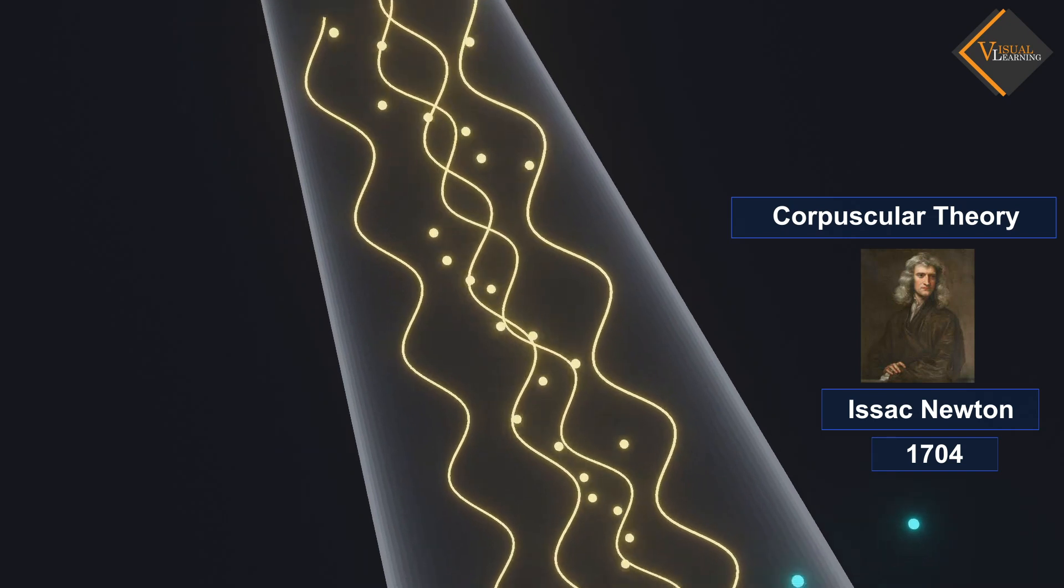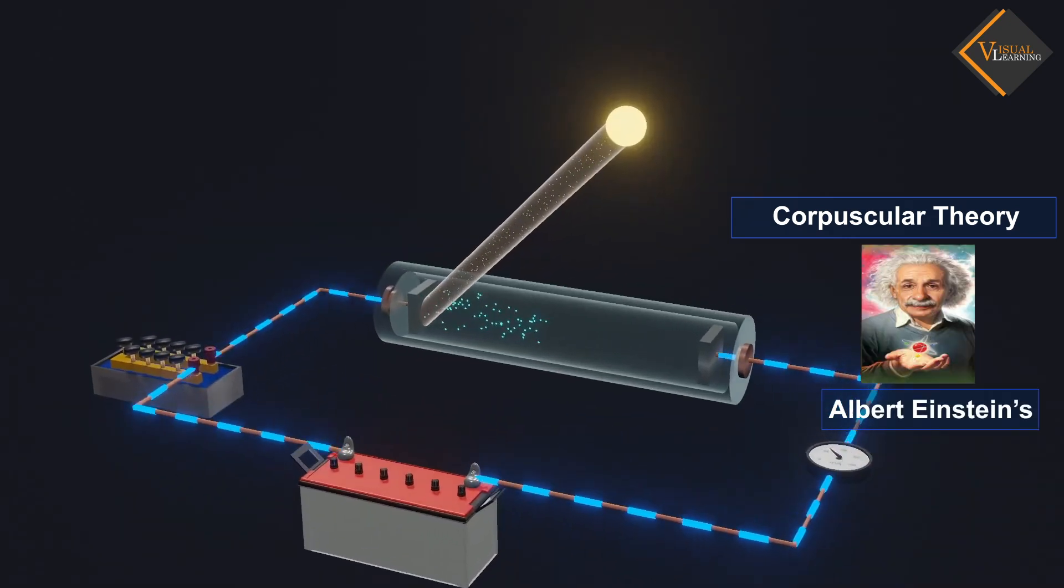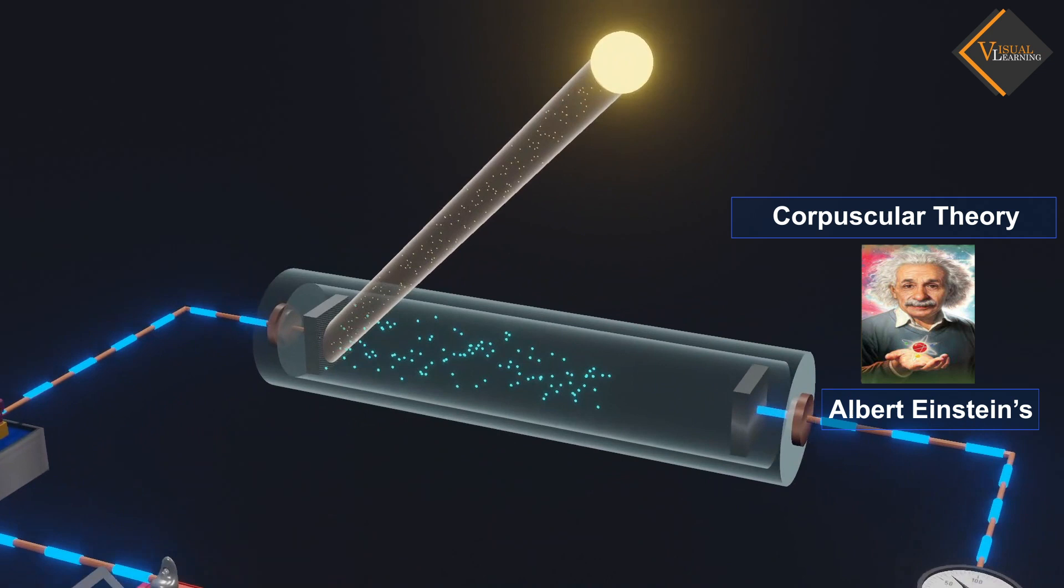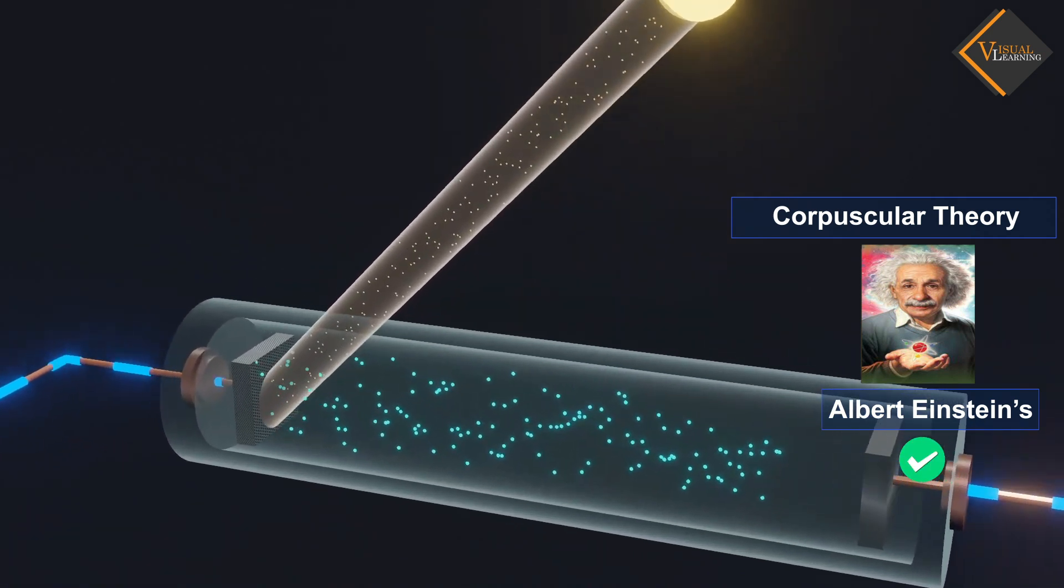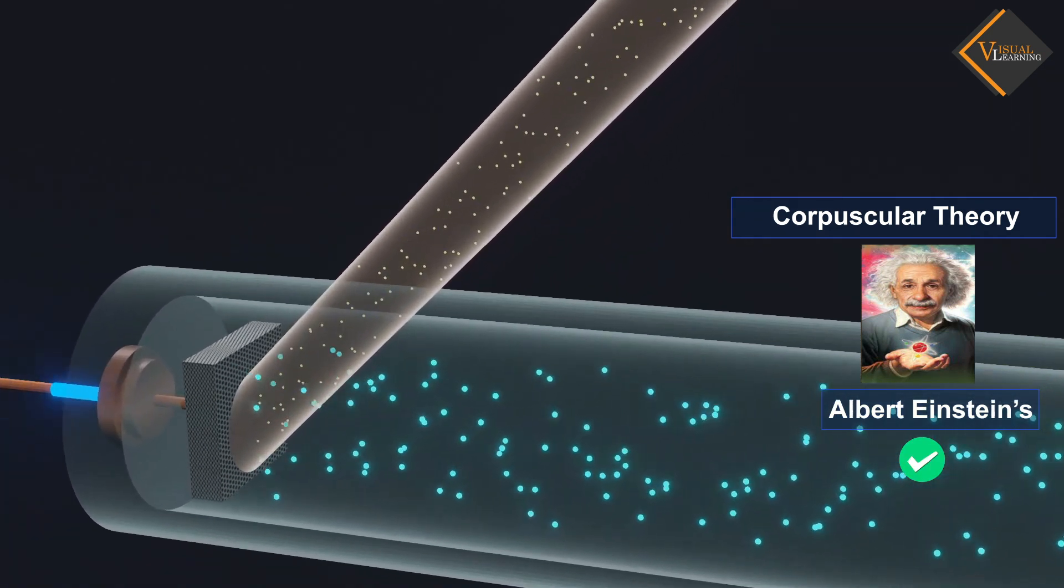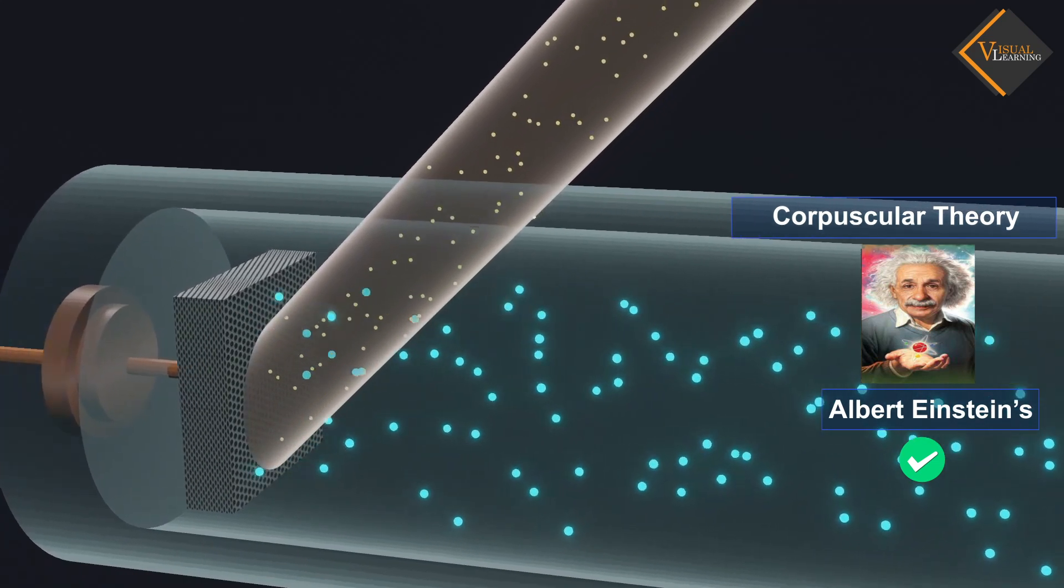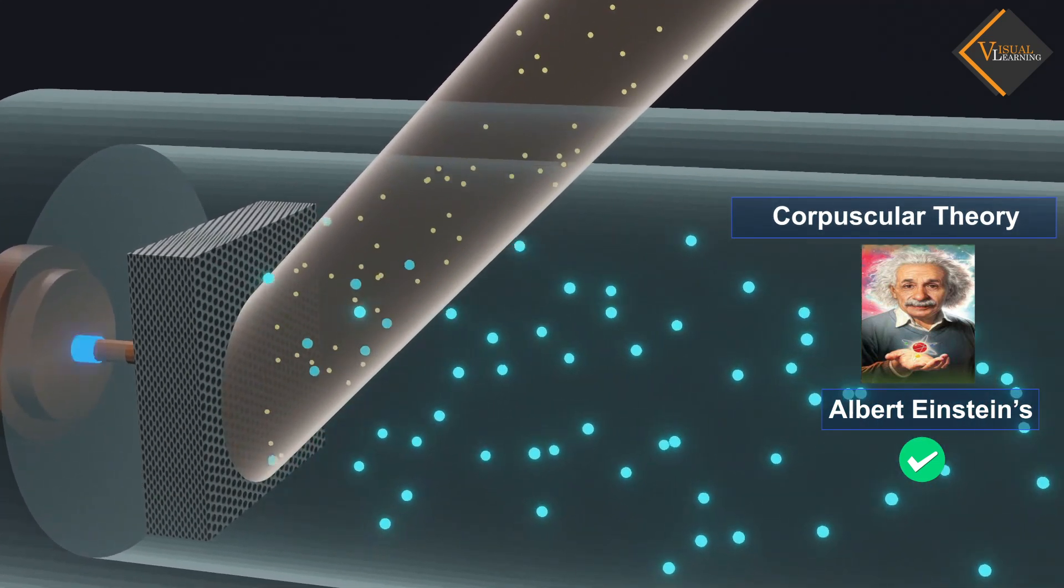Using this theory, Albert Einstein conducted experimental studies on the photoelectric effect and explained it, for which he received the Nobel Prize. Now, let's understand these phenomena in detail.